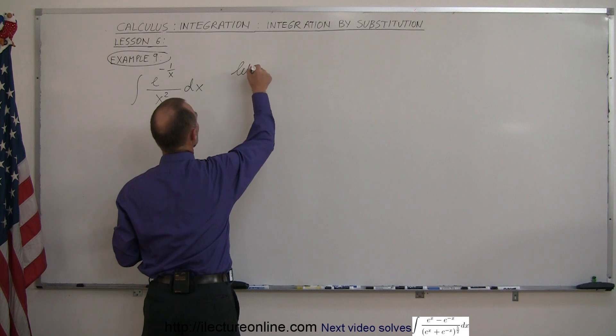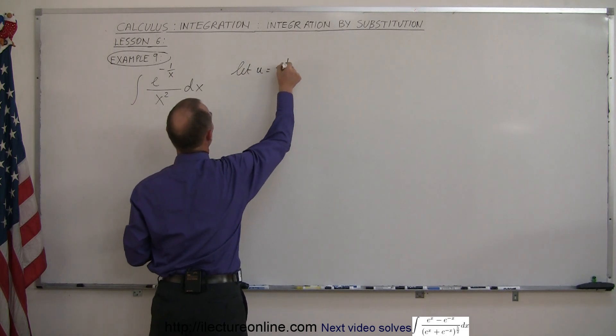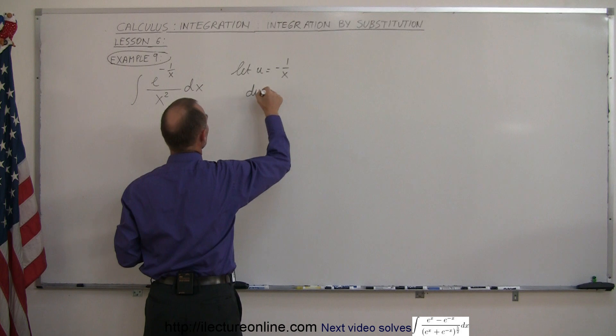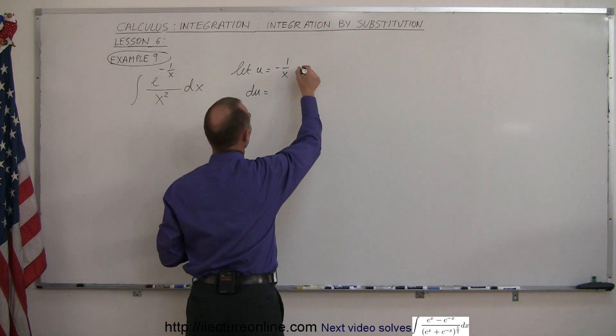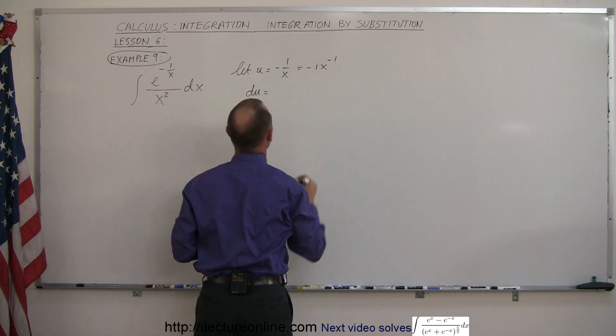Let u equal minus 1 over x. That means that du is equal to... how do we write that? Well, that's the derivative of that, so let's write this as minus 1x to the minus 1 power.